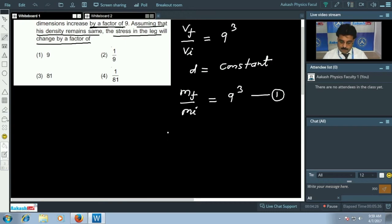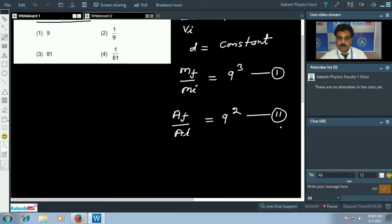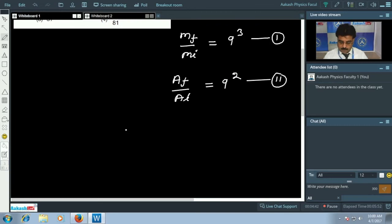Now if I go for the ratio of area, final area to the initial area, that is equal to 9 square. And this is my equation number two.